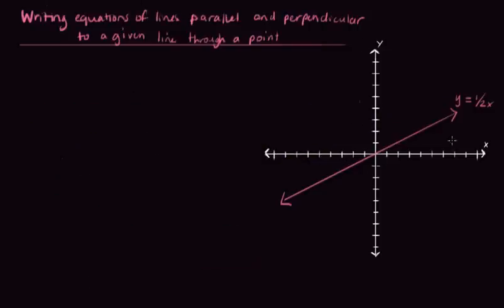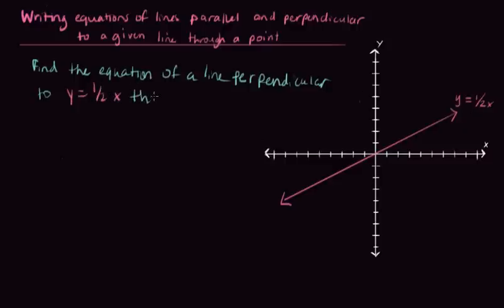So if we take our same y equals 1 half x, but now we want to find the equation of a line perpendicular that passes through (2,1). One thing to note here is that perpendicular lines are lines that cross at a 90 degree angle. So again, I want to start by visualizing this. So (2,1) is this point right here.